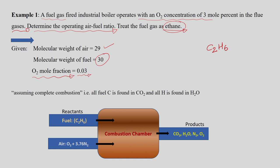Assuming complete combustion, all carbon in the fuel is found as CO2 in the product and all hydrogen as H2O. The product also has 3 mole percent oxygen. While balancing, we assume complete combustion — meaning no CO, NO2, or N2O is formed; only CO2 and H2O as products, with some oxygen at 3 mole percent.